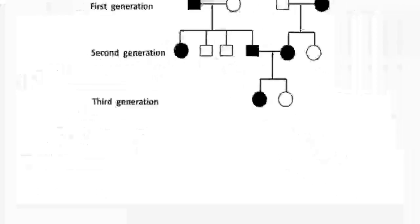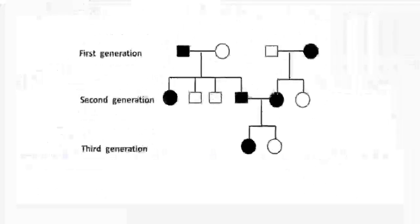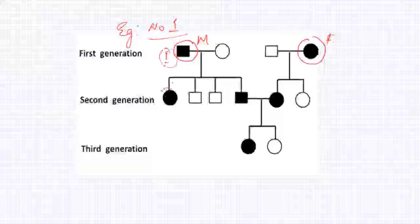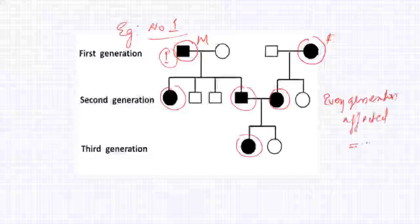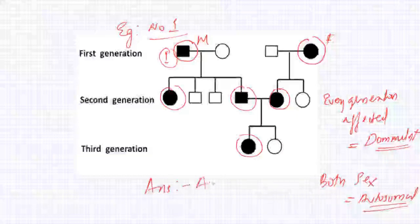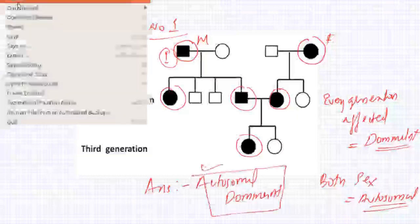Example one: I'll be marking the generations. First generation — one male and one female are affected. Second generation is also affected, and third generation is also affected. Every generation is affected, so that is a dominant character. Both sexes are also equally affected, so it is autosomal. The answer is autosomal dominant.